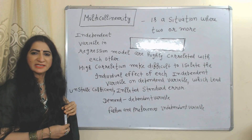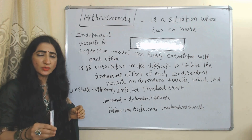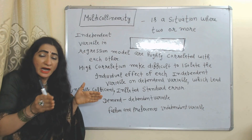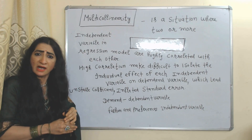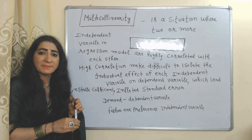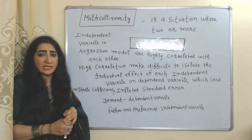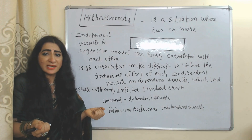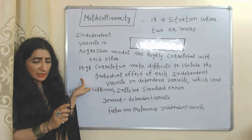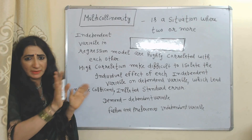The next problem is multicollinearity. Multicollinearity means when two or more independent variables in a regression model are highly correlated with each other. This is a problem because high correlation makes it difficult to isolate the individual effect of each independent variable on the dependent variable.